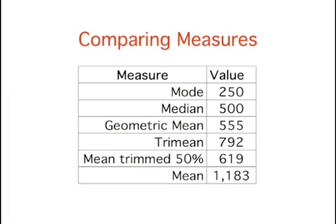As is typically the case with skewed distributions, the geometric mean, the tri-mean, and the trim mean are between the median and the mean.